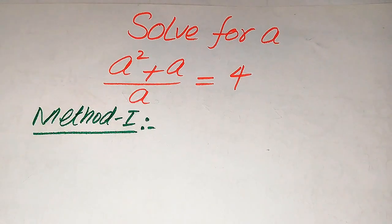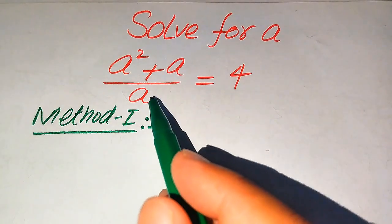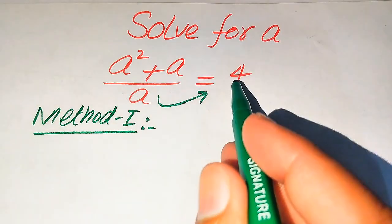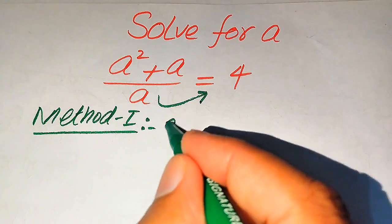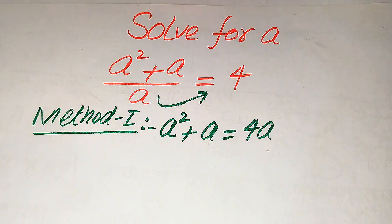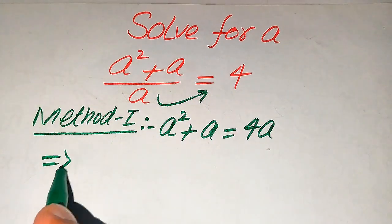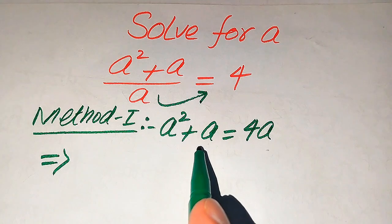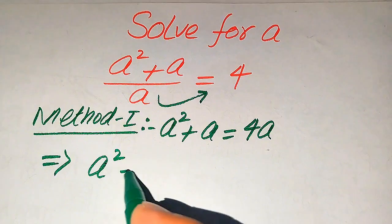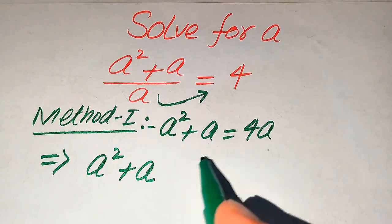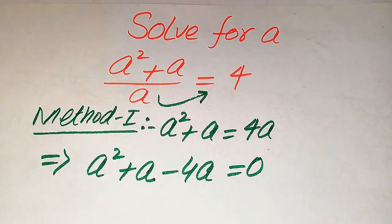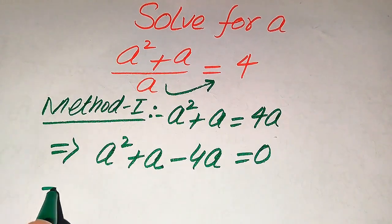In the first method, the a in the denominator on the left hand side, when moved to the right hand side, multiplies by 4. So it will be written as a squared plus a equals 4 times a. We then move 4a to the left hand side, where it becomes negative 4a, giving us a squared plus a minus 4a equals 0.